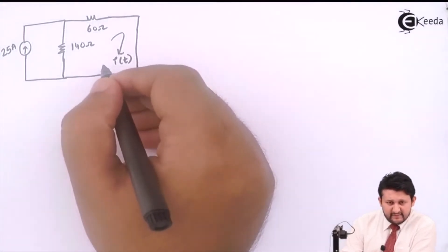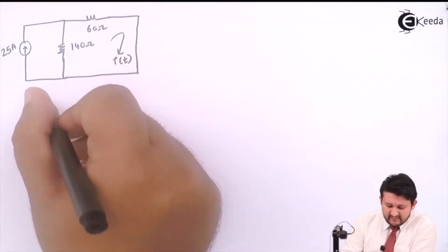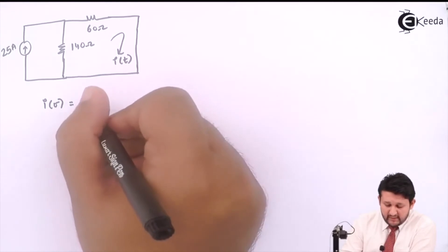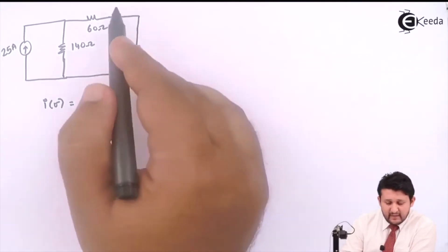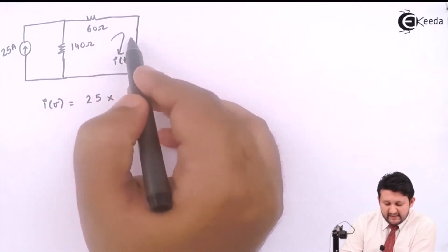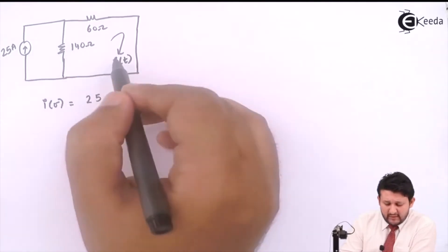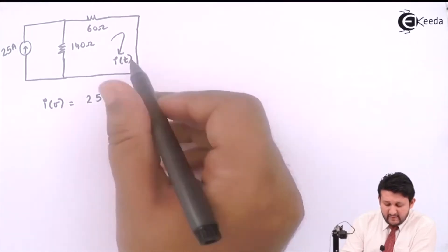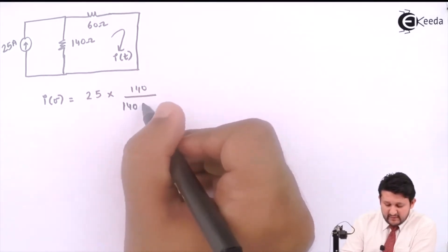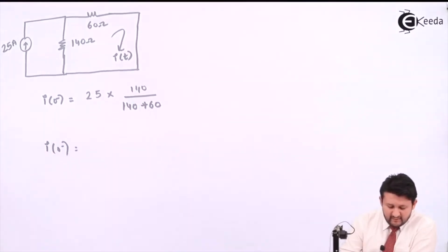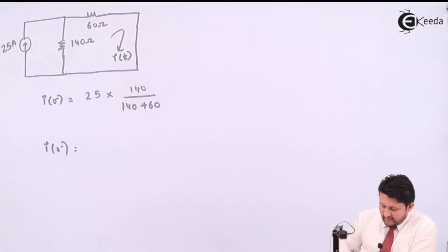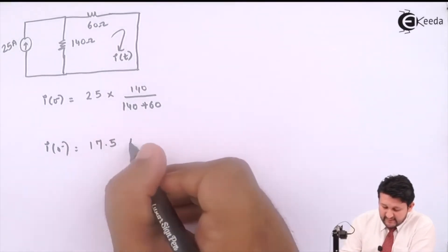Using the current division rule: i(0⁻) equals the total current, which is 25 amps. I need to find the current across this branch. By the current division rule, it is the total current multiplied by the opposite resistance (140 ohms) divided by the sum of both resistances. Applying this: i(0⁻) = 25 × 140 ÷ (140 + 60), which gives 17.7 amps.